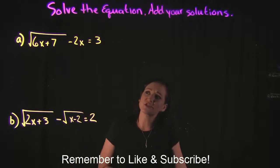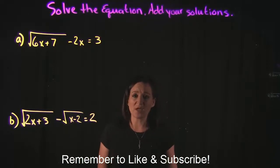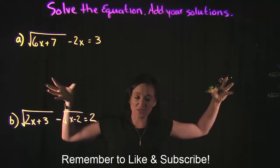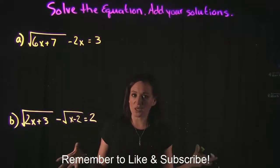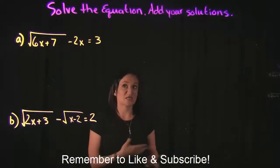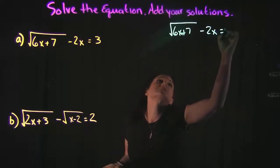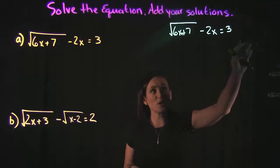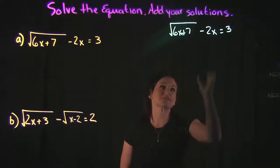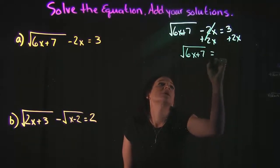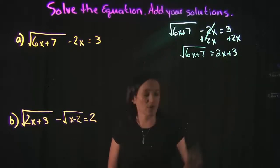For example A, we're looking at the square root of 6x plus 7, minus 2x, equals 3. When solving radical equations, the main thing you want to focus on is isolating your radical on one side. The first thing I'm going to do is add 2x to each side so that the square root is completely by itself, leaving me with the square root of 6x plus 7 equals 2x plus 3.